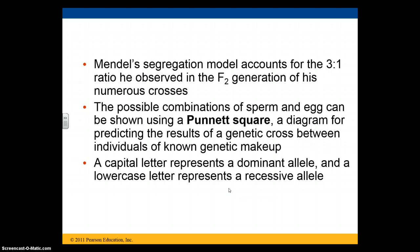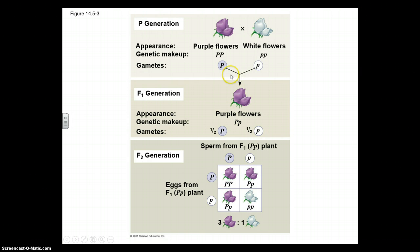We can predict possible combinations of a sperm and an egg using a Punnett square. We use capital letters to represent dominant traits and lowercase letters to represent recessive traits.